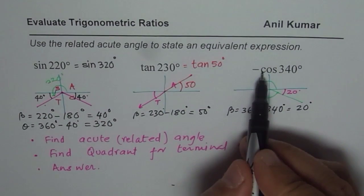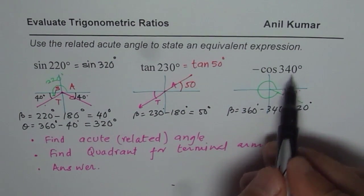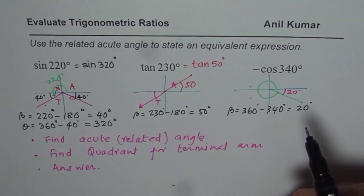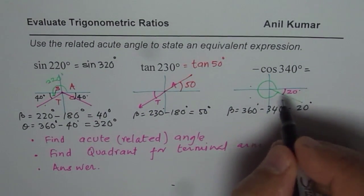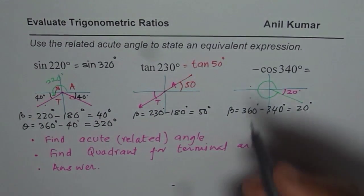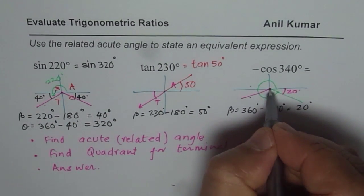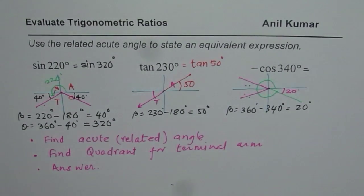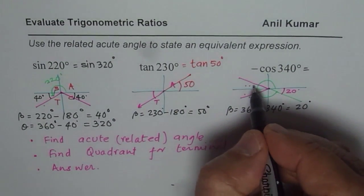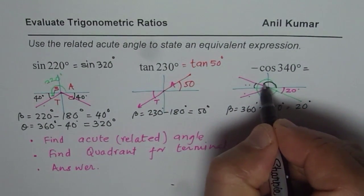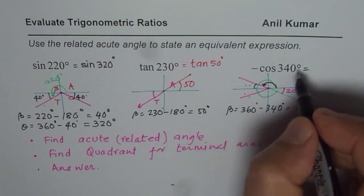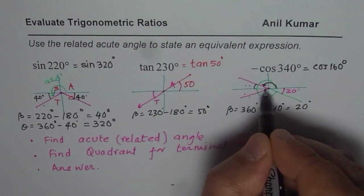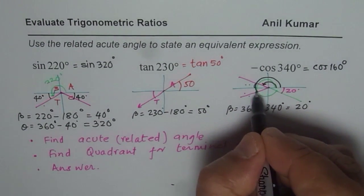But the expression here is negative of 340 degrees. So the negative value of cosine could be in these two quadrants. So we could write this as with the acute angle of 20 degrees, we could either go for the angle in quadrant 3 or in quadrant 2. So if I consider 20 degrees here, then my principal angle will be 180 minus 20.